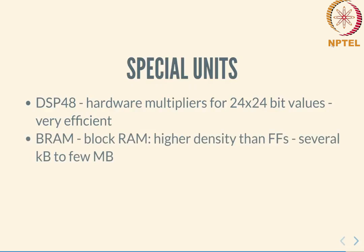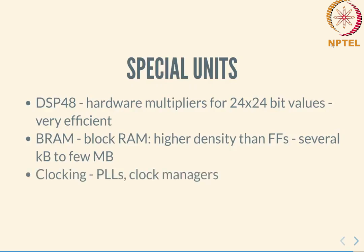Block RAM provides high-density memory — much higher density than using large numbers of flip-flops — though it is limited in capacity, typically from a few kilobytes to at most a few megabytes on the largest FPGAs. It is very high density and can be accessed at very high speed through the FPGA fabric. There are also custom hardware modules such as clock managers, phase-locked loops, and gigabit transceivers that can be used in certain circumstances, though these will not be our main focus.